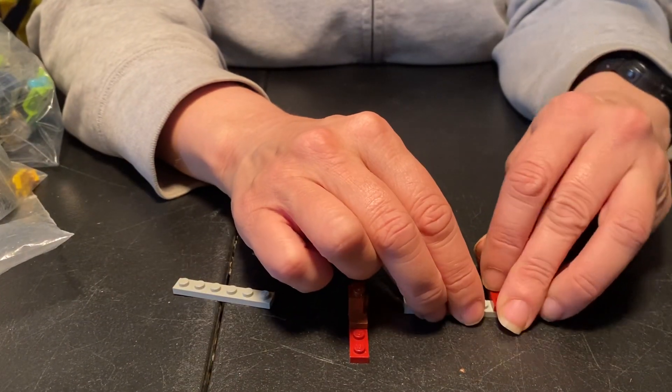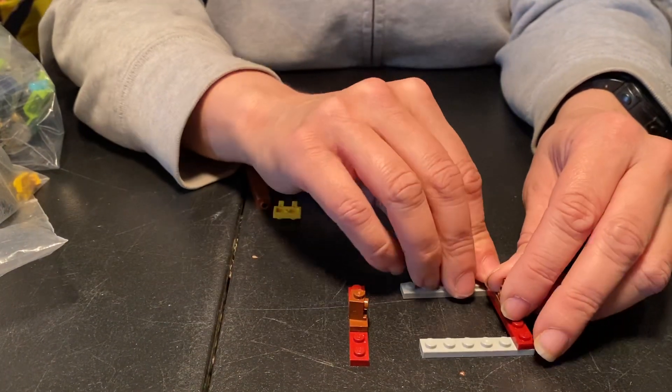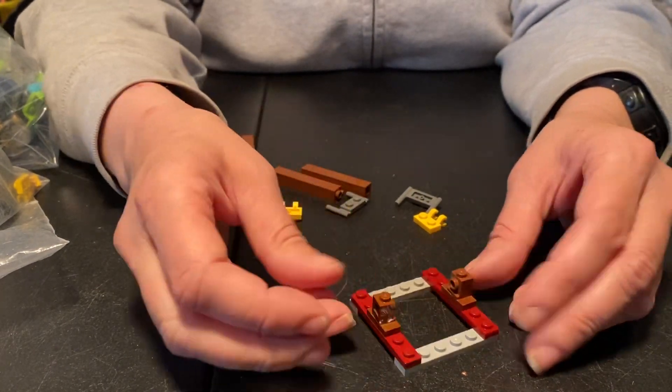Now you're going to take your other 1x6s and stick them underneath each end. So you have this.